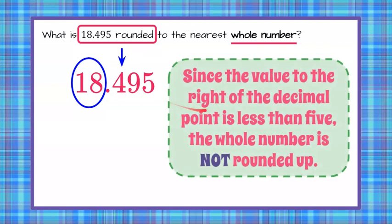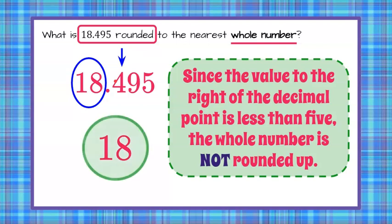Since the value to the right of the decimal point is less than 5, we leave the whole number the same and do not round up. If this value to the right is 5 or greater, you would round up. So therefore, our answer today is 18.